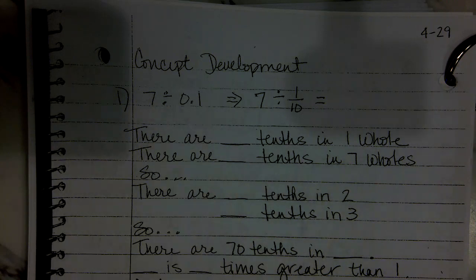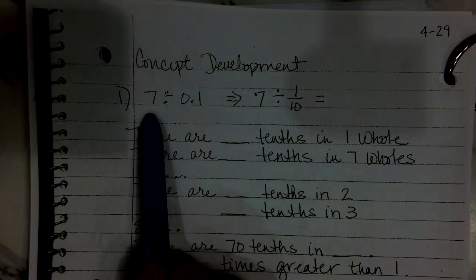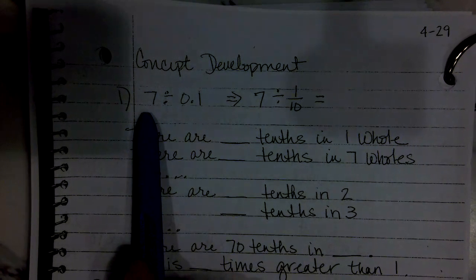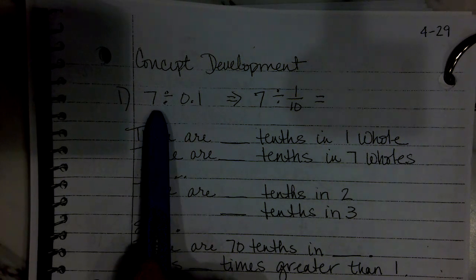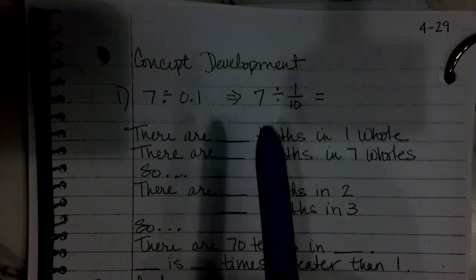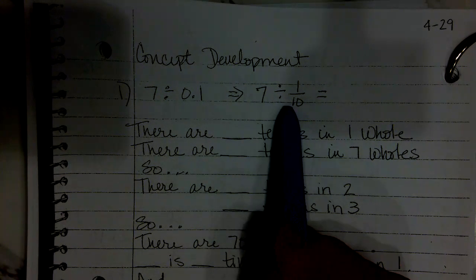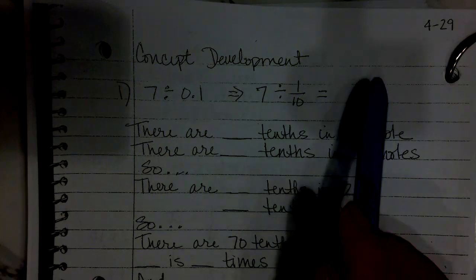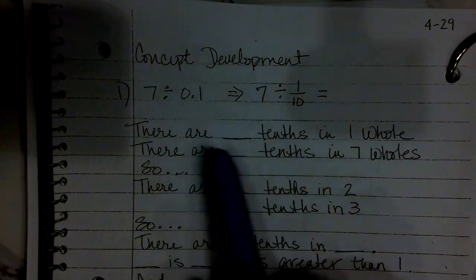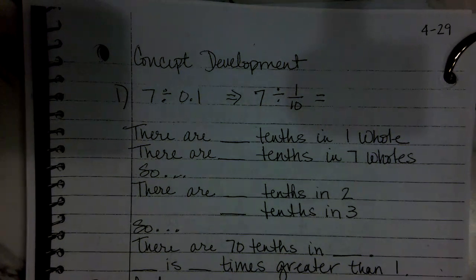Let's look at the problems at the top. Read the division expression using unit form. Seven ones divided by one-tenth. So what question does this division expression ask us? How many tenths are in seven? That's what it's asking us.